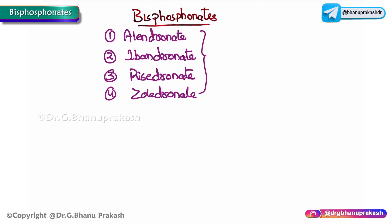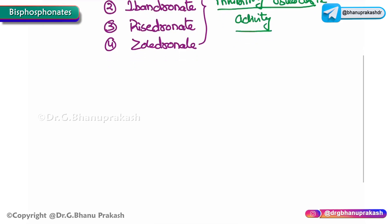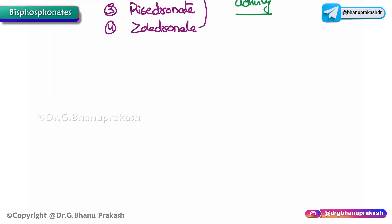What is the function of bisphosphonates? Bisphosphonates are responsible for inhibiting osteoclastic activity. Remember, it inhibits osteoclastic activity, so let us discuss in detail about the mechanism of action.